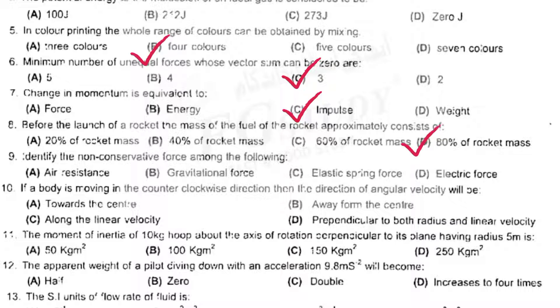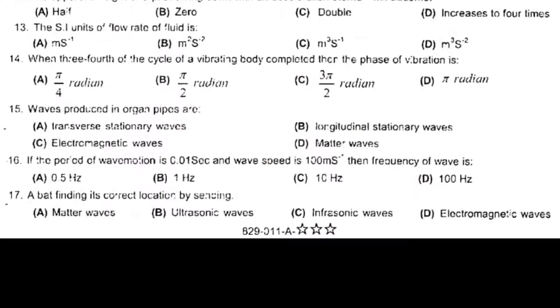Identify the non-conservative force among the following: air resistance. If a body is moving in the counterclockwise direction, then the direction of angular velocity will be perpendicular to both radius and linear velocity. The moment of inertia of 10 kg hoop about the axis of rotation perpendicular to its plane having radius 5 is 250 kg·m². The apparent weight of a pilot diving down with an acceleration 9.8 m/s² will become zero. The SI unit of flow rate of fluid is meter cube per second. When three-fourths of the cycle of vibrating body completes, then the phase of vibration is 3π/2 radians. Waves produced in organ pipes are longitudinal stationary waves.